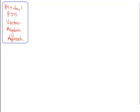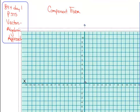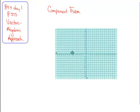What we're going to do is start by talking about the component form of a vector — this is just a new kind of notation. So if I have a vector, let's look at it geometrically. I have a vector going from the point negative 7, 1, to the point negative 1, 3.